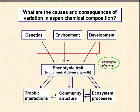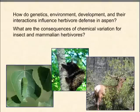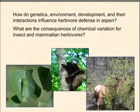To summarize, our research primarily involves two questions: how do genetics, environment, development, and their interactions influence herbivore defense in Aspen? And secondarily, what are the consequences of variation in plant chemistry for both insect and mammalian herbivores?